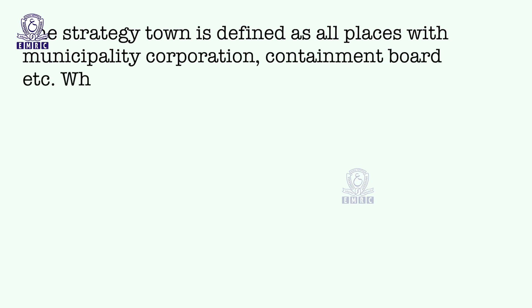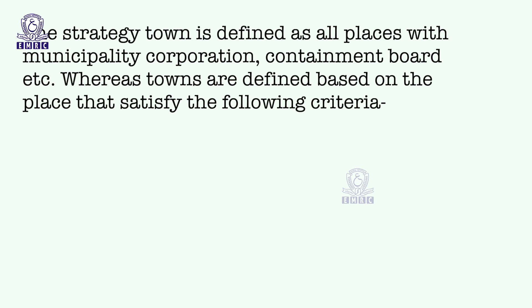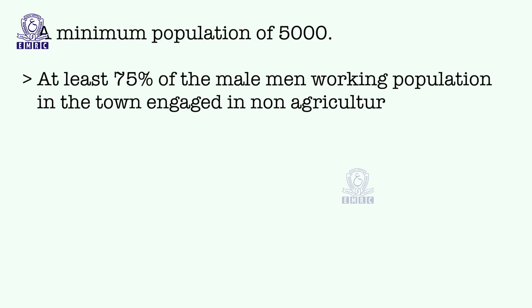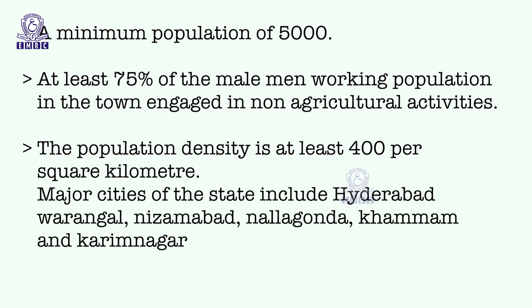In urban areas, the lowest primary administrative unit of administration is towns. Towns include statutory towns and census towns as identified by the census organization. A statutory town is defined as all places with a municipality, corporation or cantonment board. Census towns are defined based on a minimum population of 5,000, at least 75% of the male population working in non-agricultural sectors, and a population density of at least 400 per square kilometer. Major cities include Hyderabad, Warangal, Nizamabad, Nalgonda, Khammam and Karimnagar. There are a total of 158 towns in Telangana state, of which 42 are statutory towns and 116 are census towns.